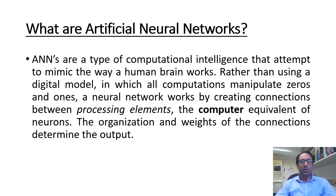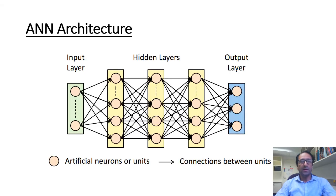The organization and ways of the connection determine the output. The displayed slide shows an example of an artificial neural network architecture which consists of three hidden layers sandwiched between an input and an output layer.